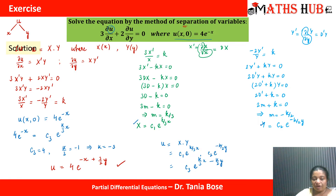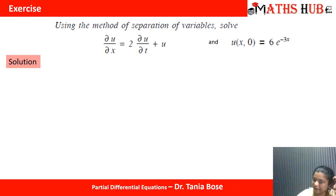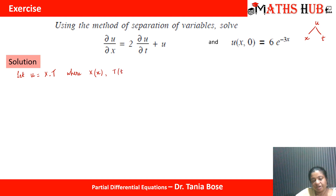Now let us try one more question. We need to solve by the method of separation of variables: ∂u/∂x + 2·∂u/∂t + u = 0, with the condition u(x, 0) = 6e^(-3x). Clearly u depends on x and t, so we assume u = X(x)·T(t), where X is a function of x only and T is a function of t only.